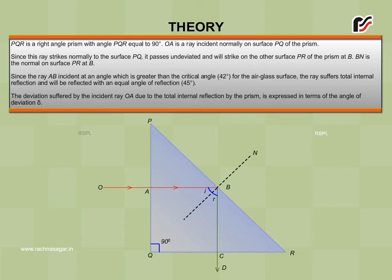...the ray suffers total internal reflection and will be reflected with an equal angle of reflection 45 degree. The deviation suffered by the incident ray, OA, due to the total internal reflection by the prism is expressed in terms of the angle of deviation, delta.